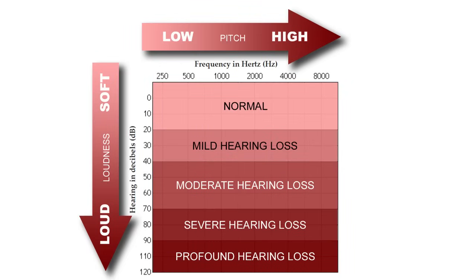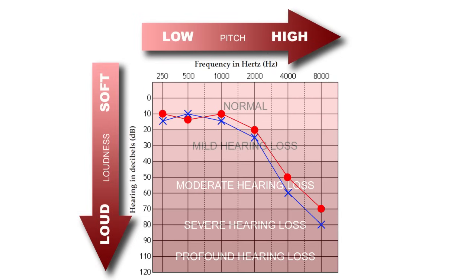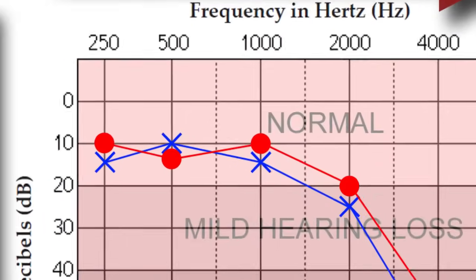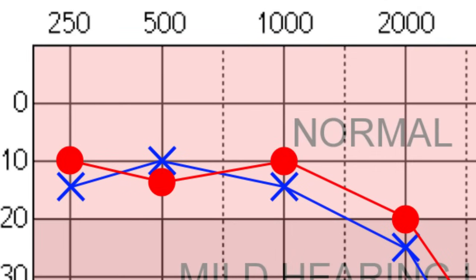In our first example, you will notice that this person has hearing that falls into the normal range up to about 1500 Hertz. At 2000 Hertz their hearing starts to make its way into the mild hearing loss category, more so for the left ear.